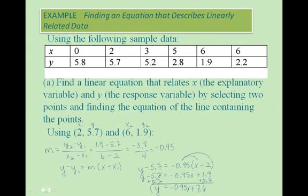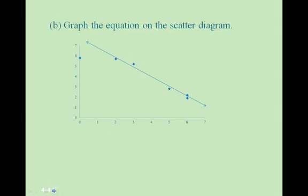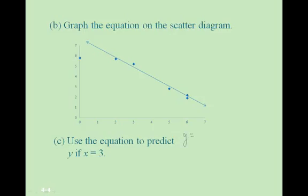This is our equation of the line. Here you'll see we've graphed the equation on our scatter diagram where we plotted all the individual data points. Now let's use the equation to predict y if x equals 3. Our equation is y equals negative 0.95x plus 7.6. Plugging in 3 for x, we get the value of 4.75.